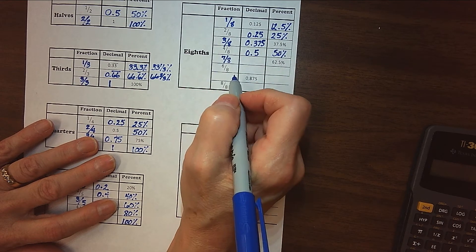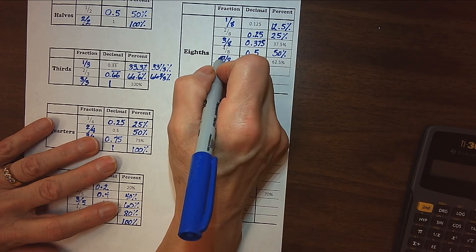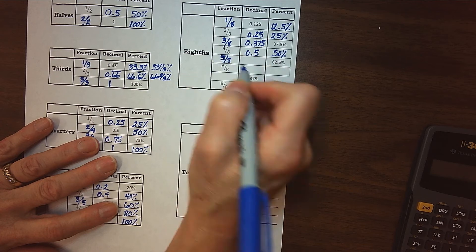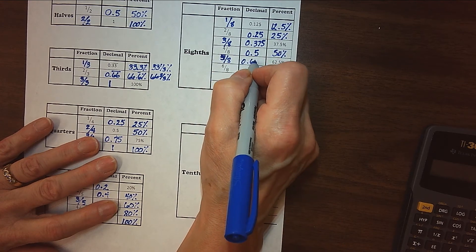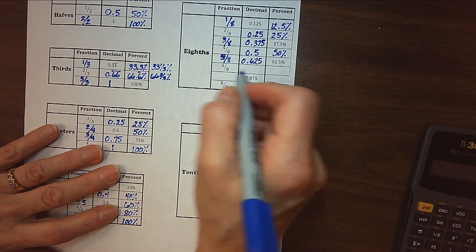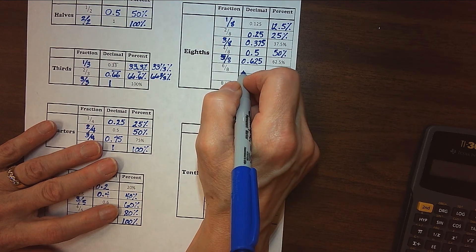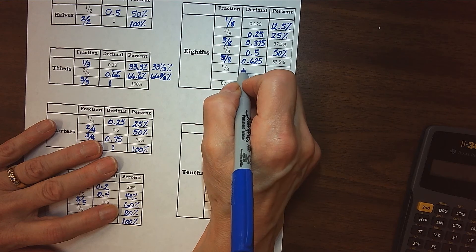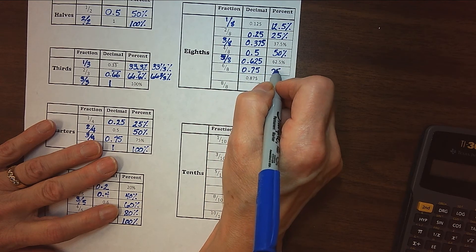Seven-eighths, do you have a new one to us maybe? Oh, I jumped there, didn't I? I'm sorry. That's five-eighths. My apologies. Five-eighths would be 0.625 and 62.5%. Six-eighths, kind of jumped ahead a couple, didn't I, there? This one is just like three-fourths. So this is 0.75 and 75%.